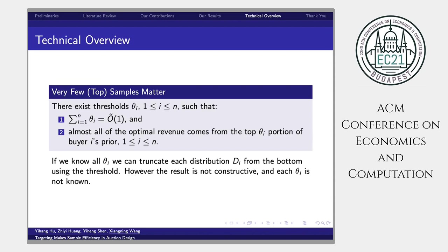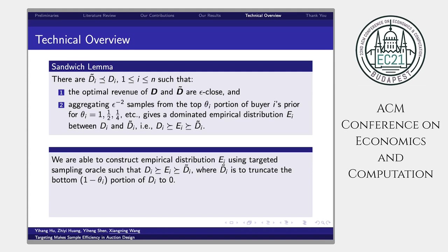We believe that this lemma shows a very important property of this problem and makes use of the problem structure to solve it. If we know all ζi, we can truncate each distribution di from the bottom and using the threshold ζi. However, this result is only existence, not constructive, and each ζi is not known to us. Therefore, we need another lemma to solve the problem.